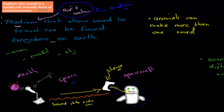On Earth itself, we have mediums everywhere — water and air are really good mediums, and even quite a few solids. For example, sound can travel through glass; if you yell near glass, you can often still hear it on the other side, because sound can travel through solid mediums as well.